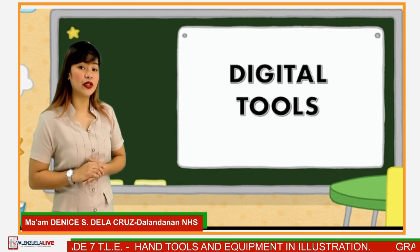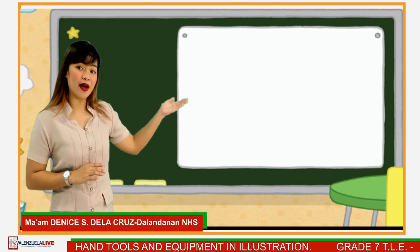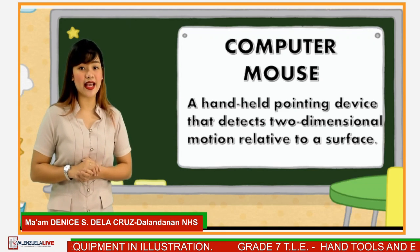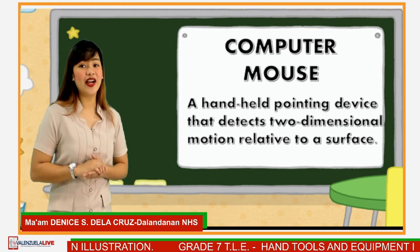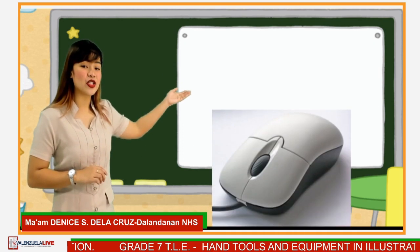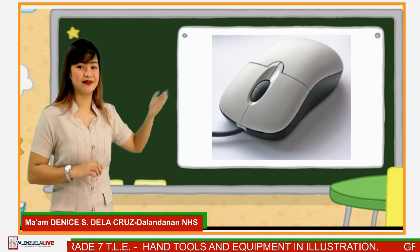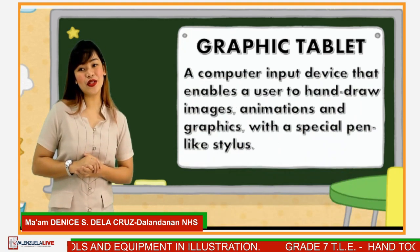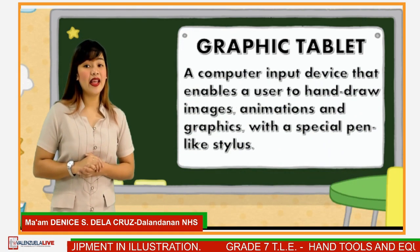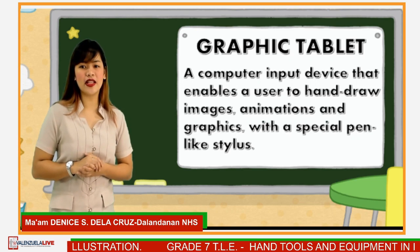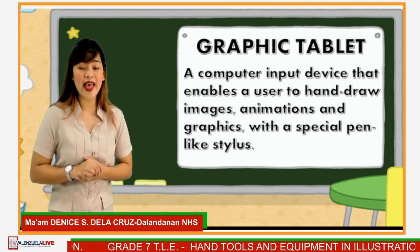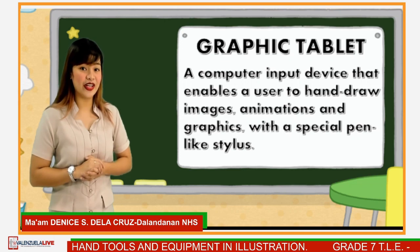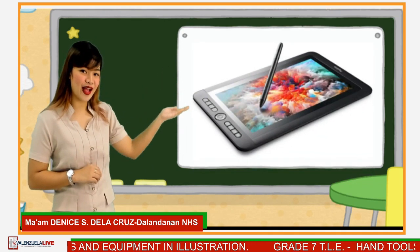For the digital and modern tools, we have the computer mouse. A computer mouse is a handheld pointing device that detects two-dimensional motion relative to a surface. Next tool is the graphic tablet, also known as a digital drawing tablet. It is a computer input device that enables a user to hand-draw images, animations, and graphics with a special pen-like stylus.